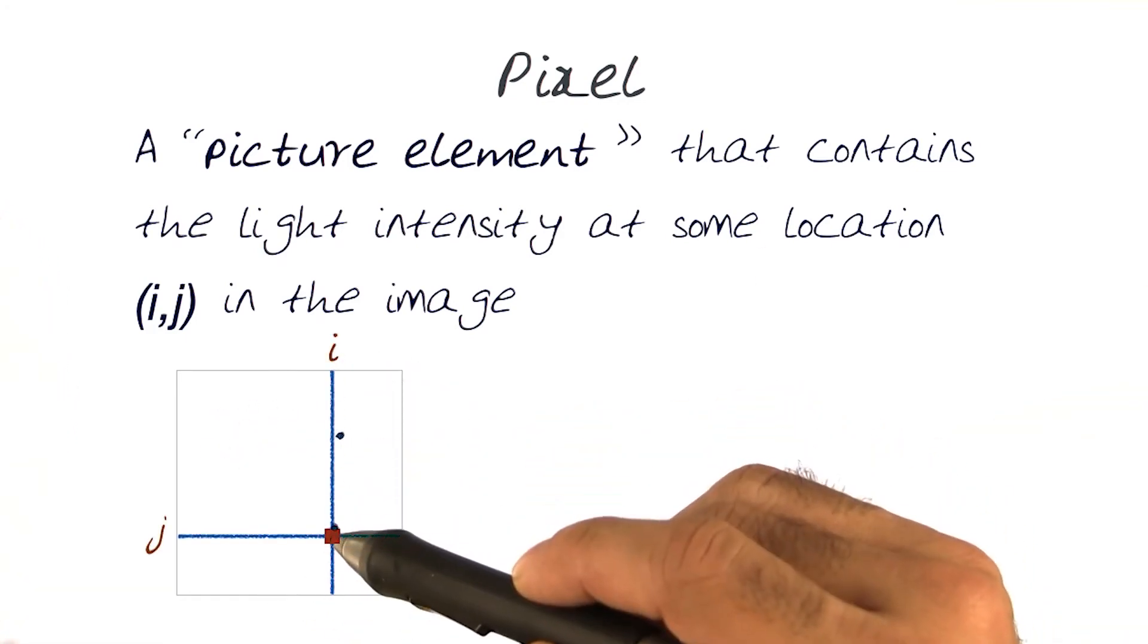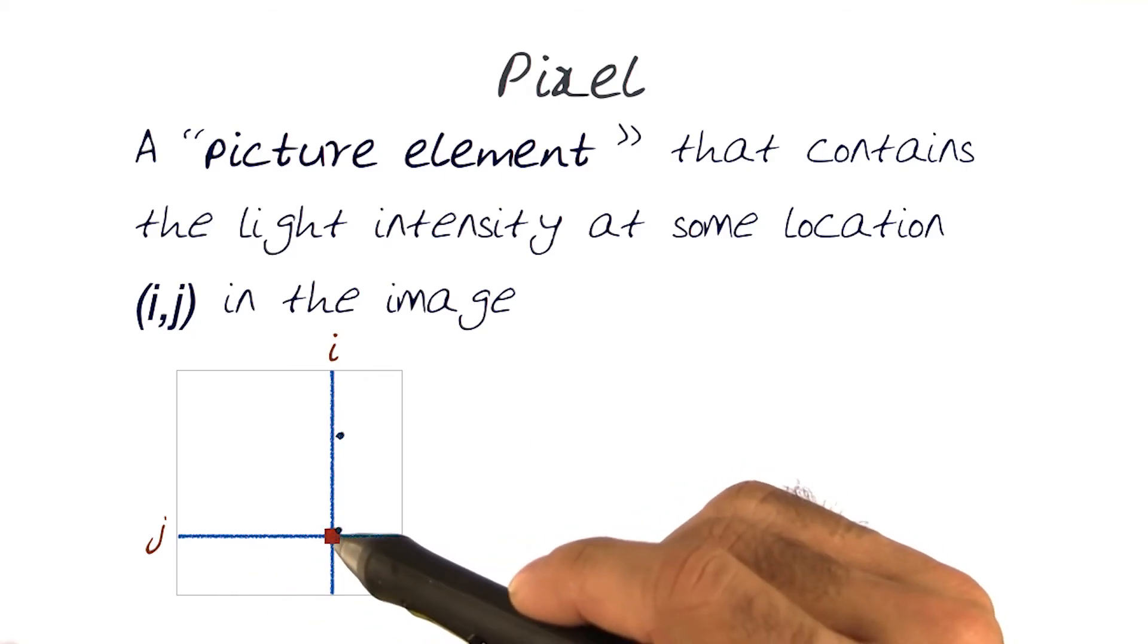So for example, at the i-th and the j-th index, this is the value, this is the pixel. What would be the intensity value at that location?